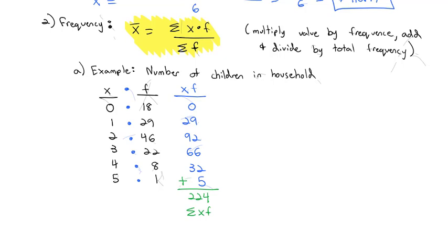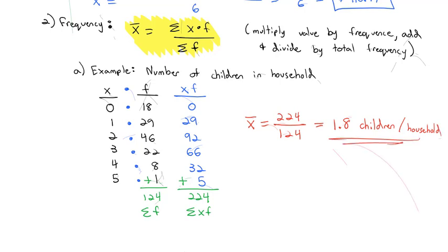But in the denominator, we also need the sum of the frequencies. So we'll add up the frequencies as well. 18 plus 29 all the way down plus 1, we get 124 is the sum of the frequencies. Our formula then for the average, or x-bar, is the sum of x times f, which is 224, divided by the sum of the frequencies, which is 124. And when we divide those, we get 1.8 children per household. That becomes our mean, or center, number of children.